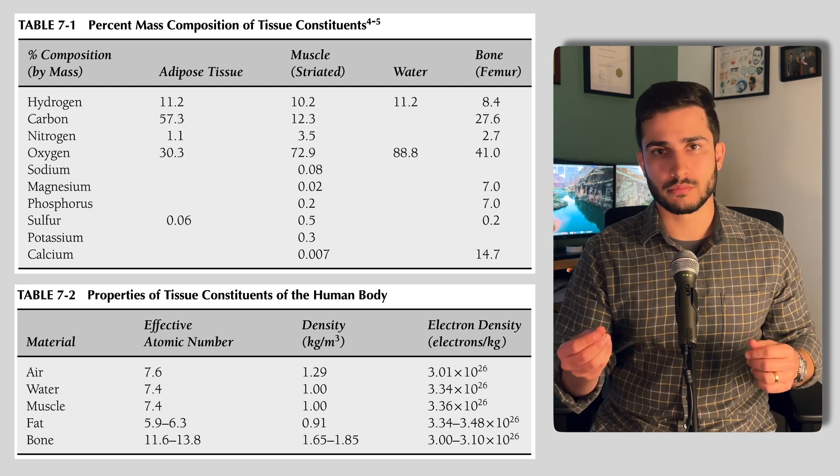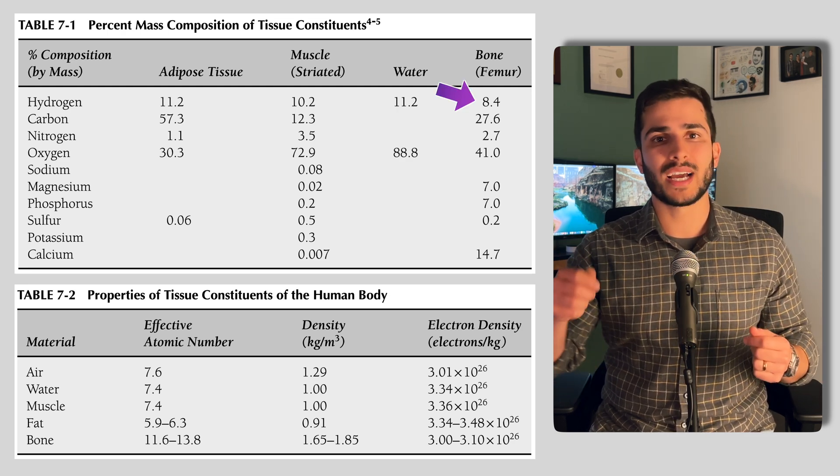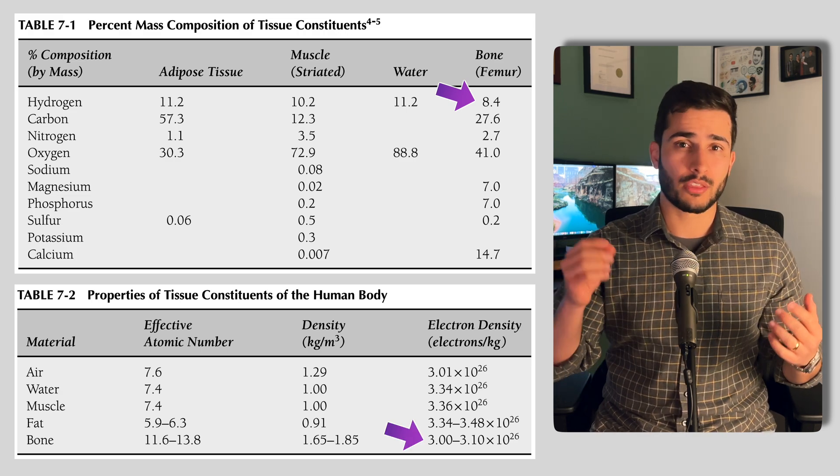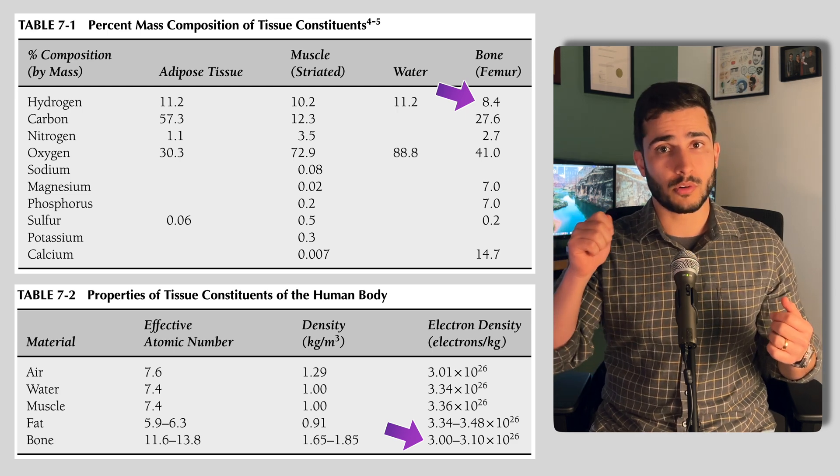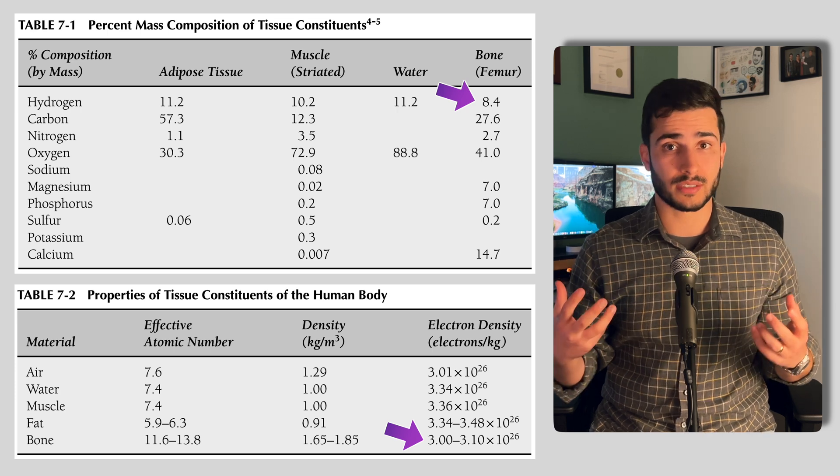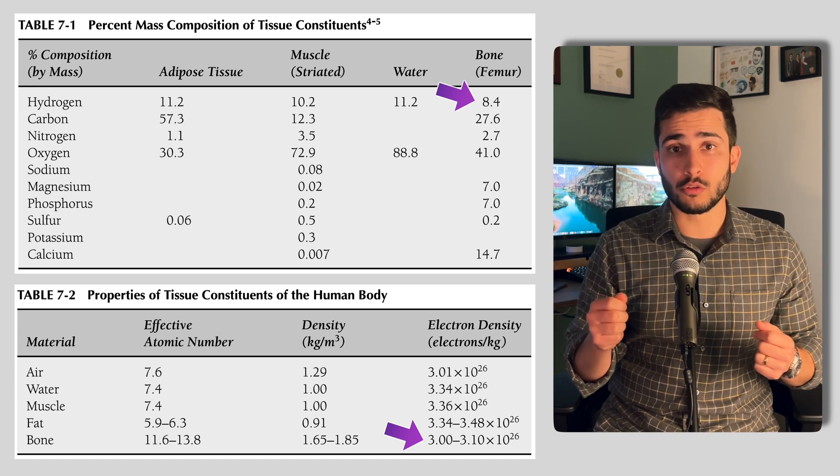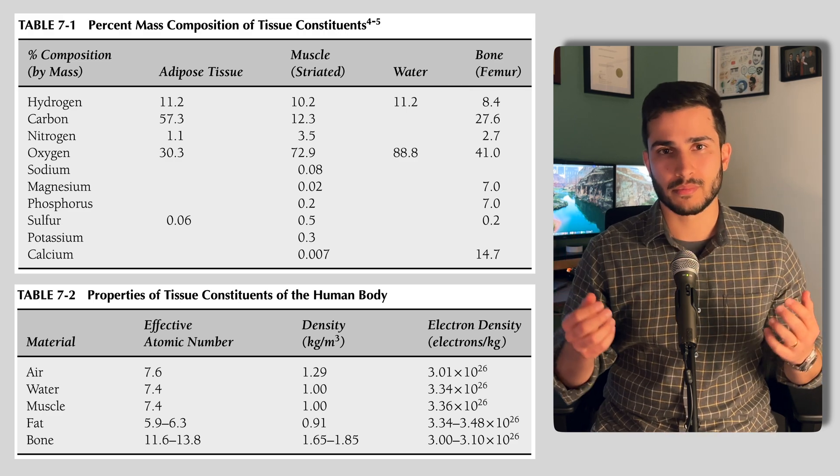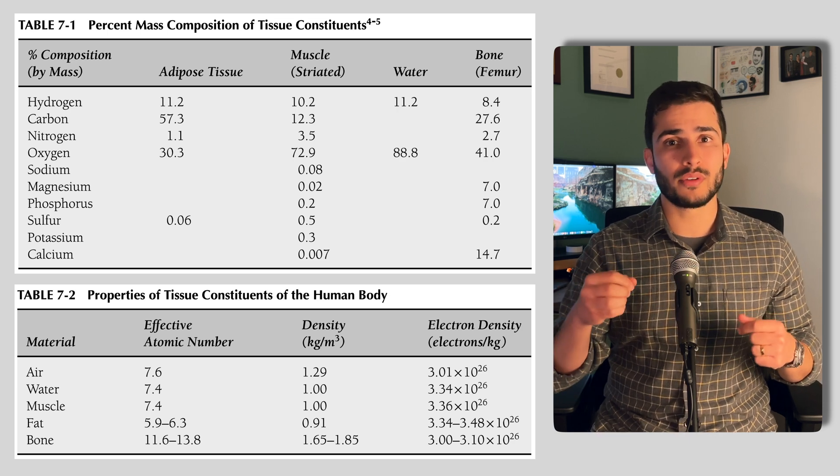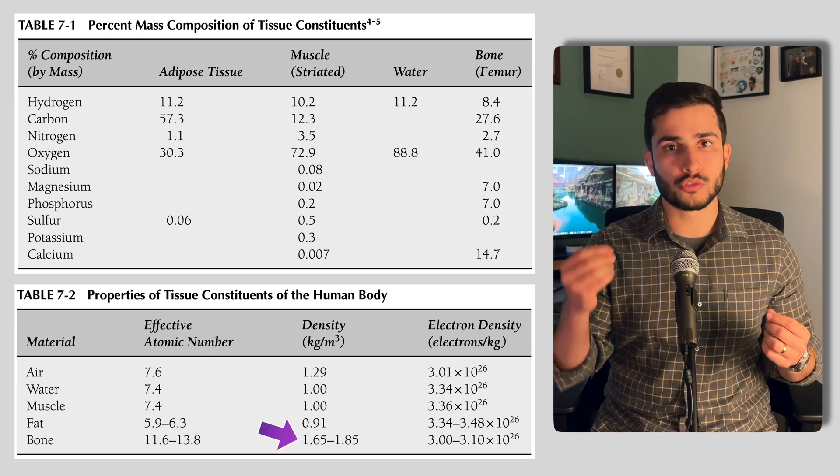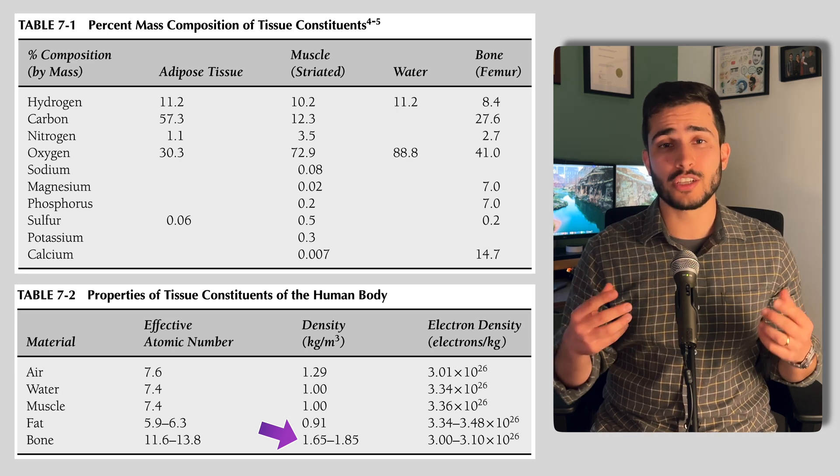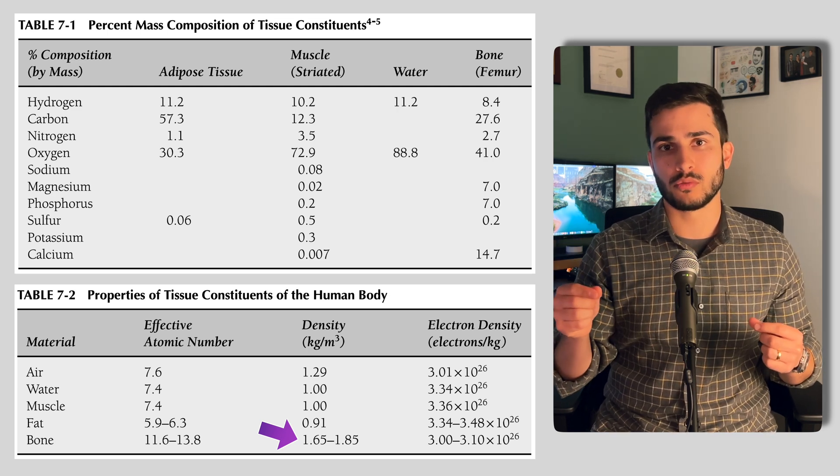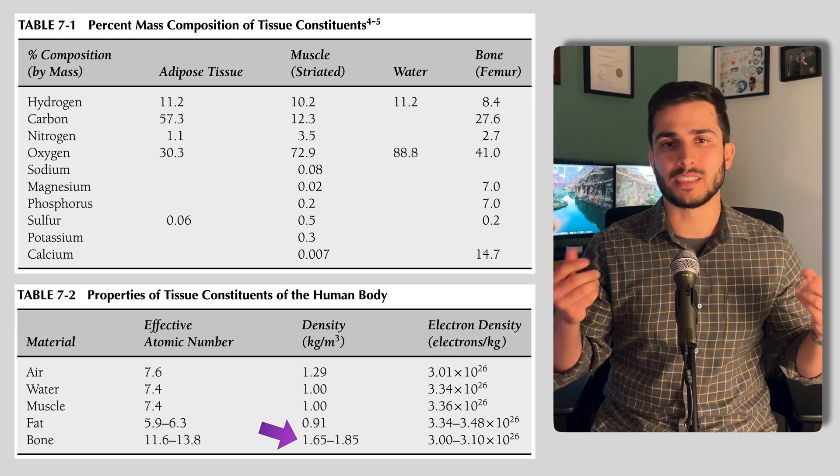What about energy absorption in bone? Well, when compared to muscle or fat, bone actually has less hydrogen, and as a result, its electron density is lower as well, at about 3 to 3.1 times 10²⁶. Because remember what we said earlier, that hydrogen has about twice the electron density, and it's for this reason that the energy absorbed per gram of bone is slightly less than the energy absorbed per gram of muscle or fat. Now, although electron density is less, bone has a higher physical density, at almost twice that of muscle or fat. And so we can say that the energy absorbed per volume of compact bone is almost twice that of the equal volume of fat or muscle, at least when exposed to X-rays or gamma rays of intermediate energy.